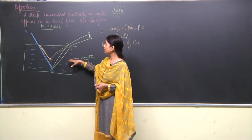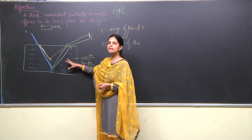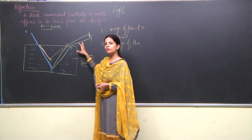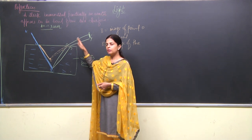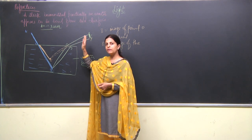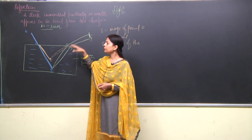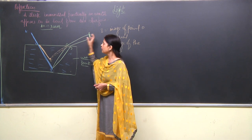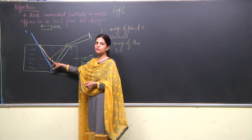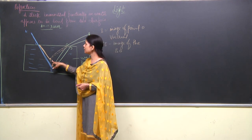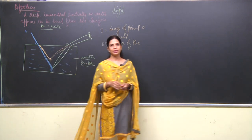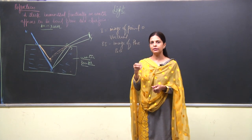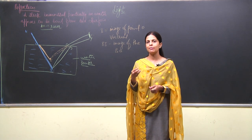All these examples work the same way - the virtual image is formed, and after refraction when the medium is changing from denser to rarer medium, the ray will move away from the normal. That is the reason after refraction the person observing from outside sees a virtual image, and that is the reason the stick appears to be bent. This is how all the reasons and examples can be understood.